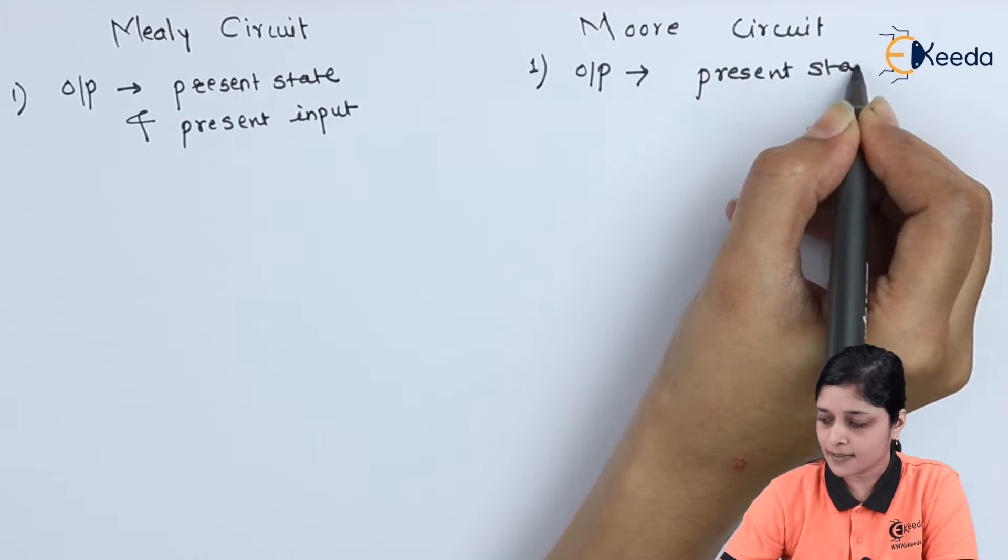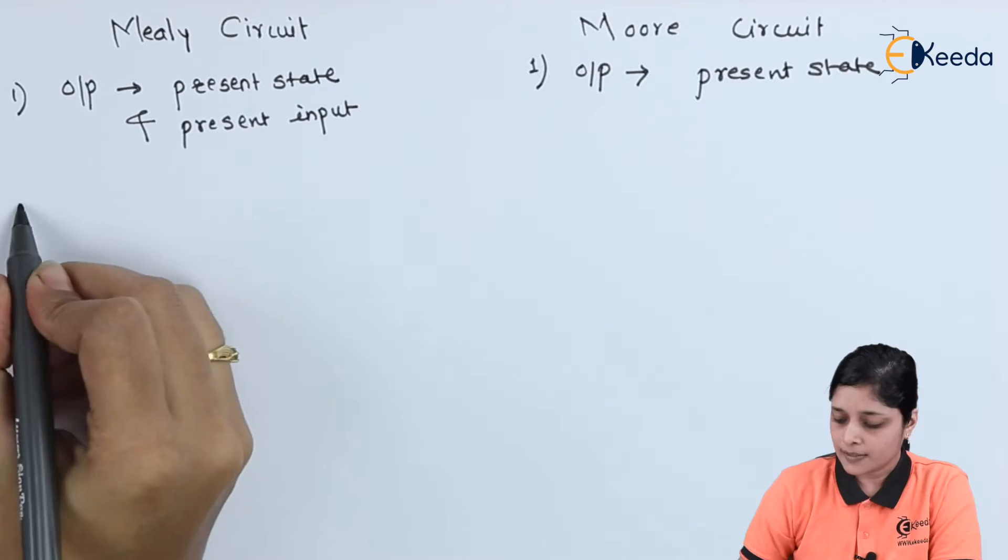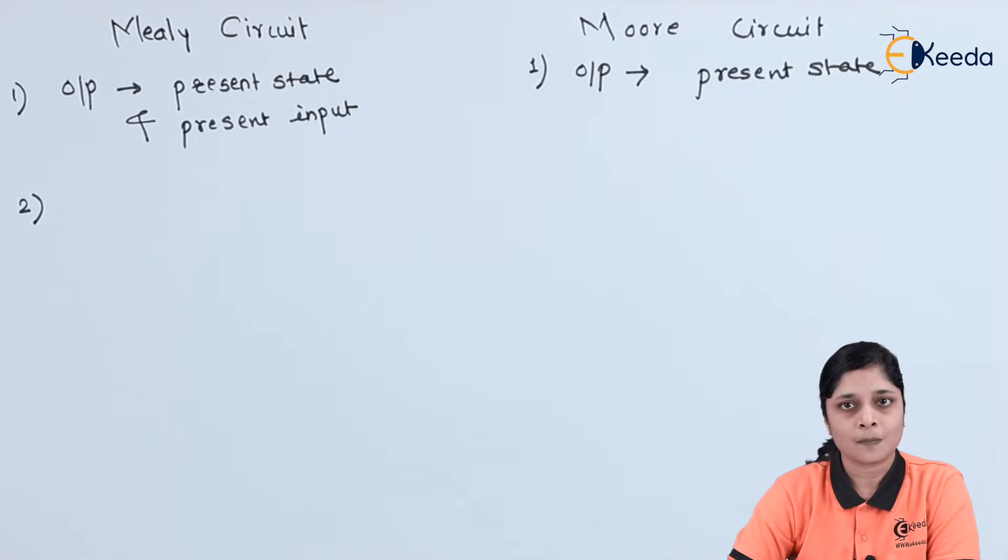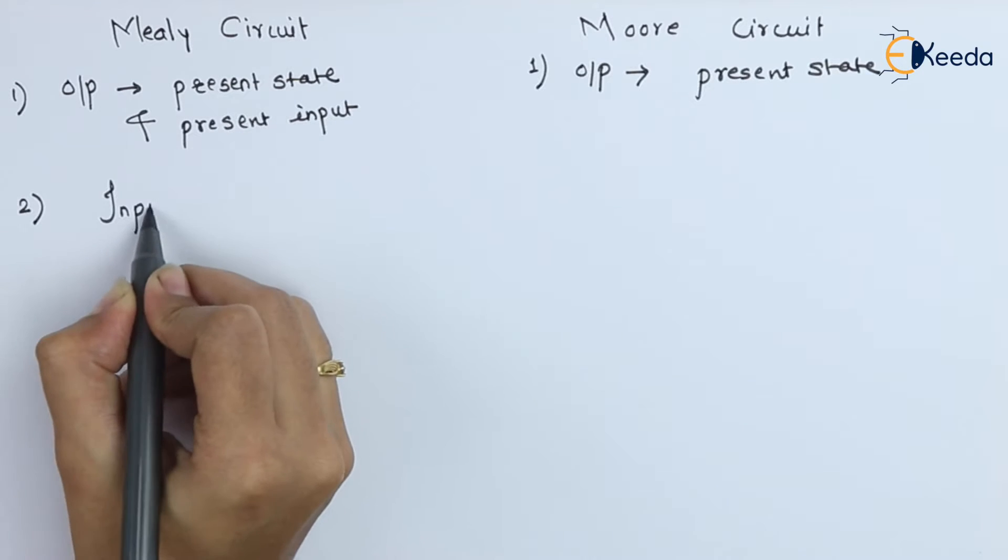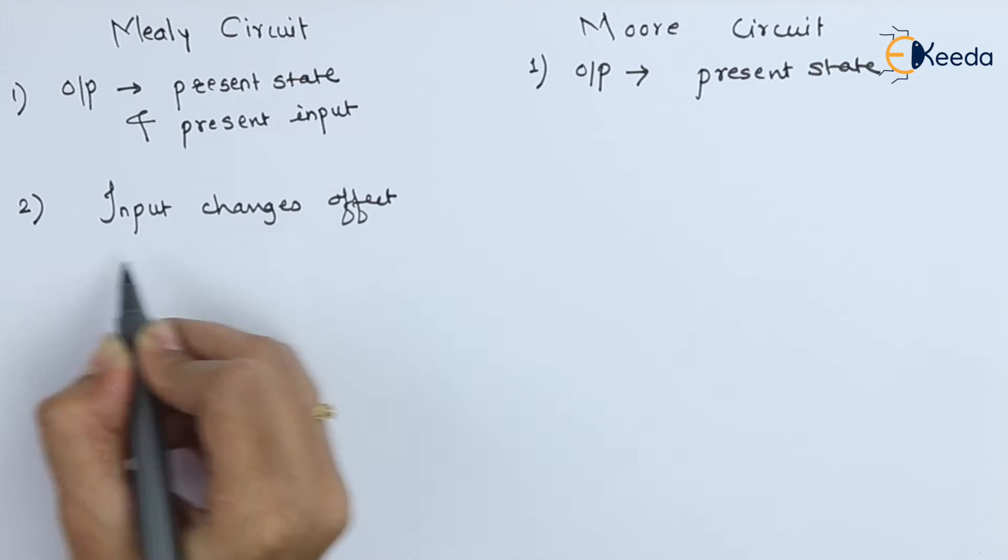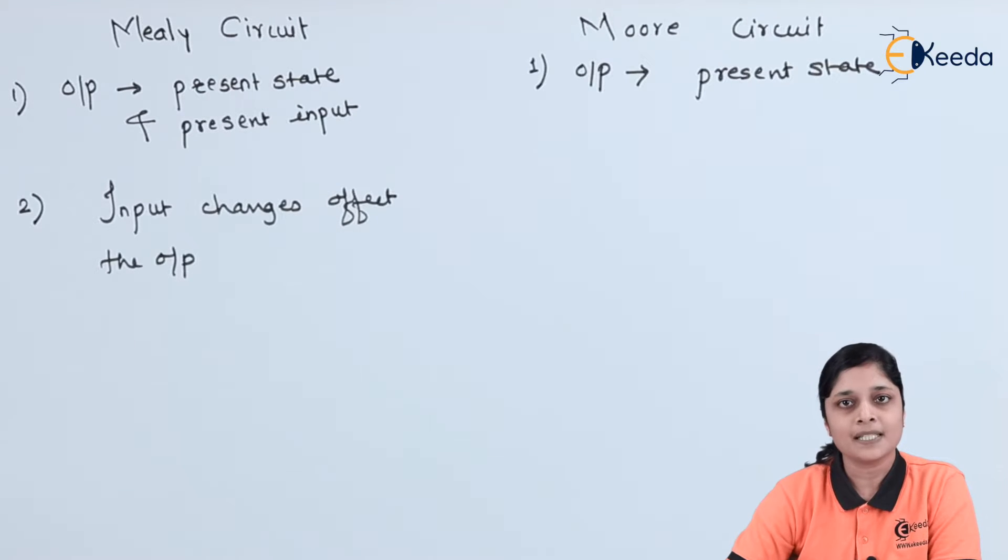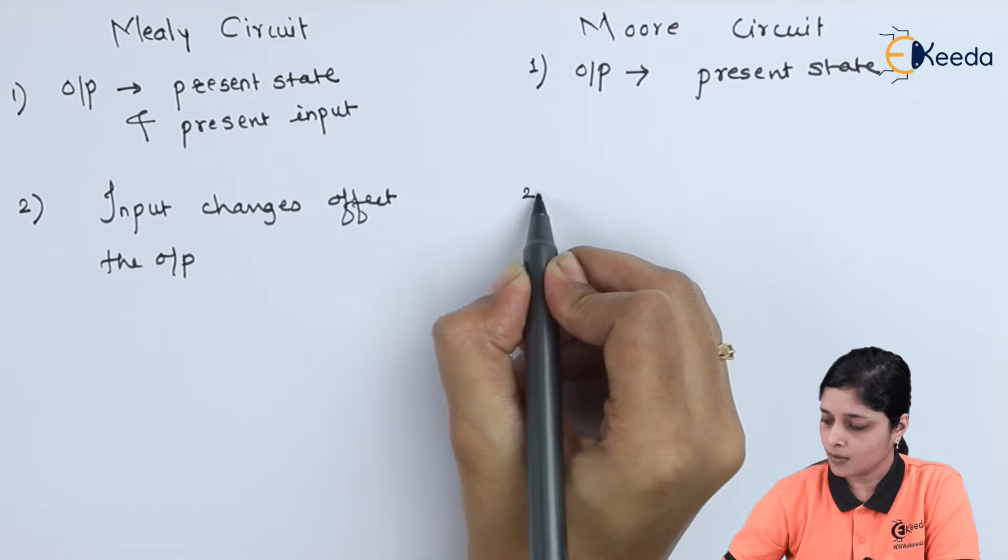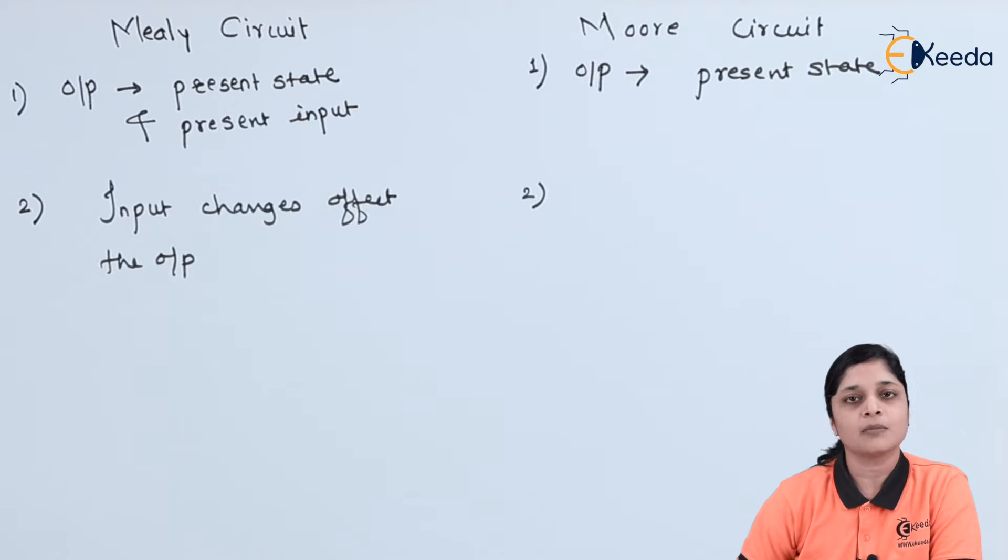The second point we can write: the input changes affects the output in Mealy circuit. Means if you do the changes in input side, then output also changes. In Moore circuit, input changes doesn't affect the output.